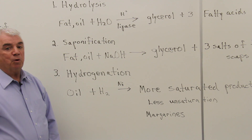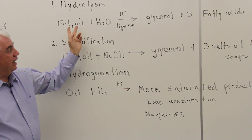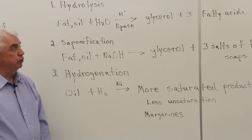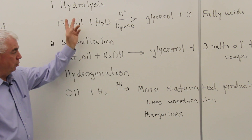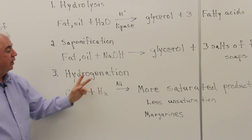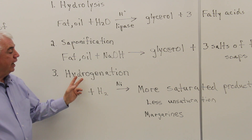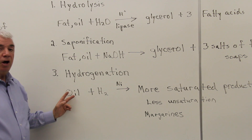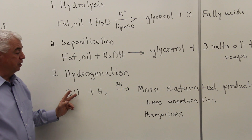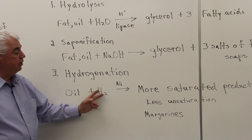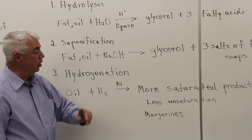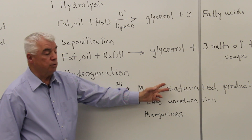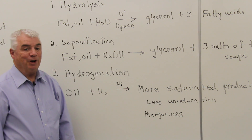The first reaction is very important as well, because as fats and oils are broken down in the body, we get a lot of energy from glycerol and fatty acids. The third reaction is called hydrogenation. Oils typically have a lot more unsaturation or double bonds than fats. They can react with hydrogen — it requires a catalyst, something like nickel — and as these double bonds pick up the hydrogen, they're converted into a saturated product; that is, the double bonds disappear.